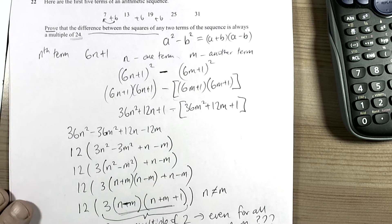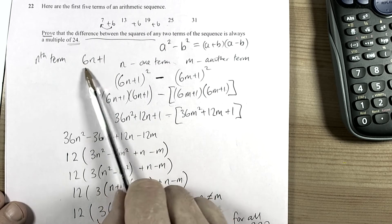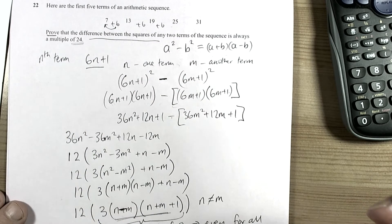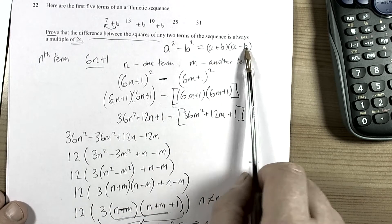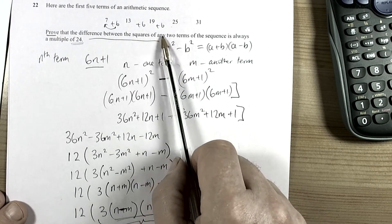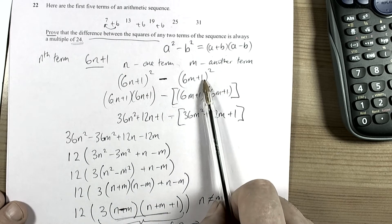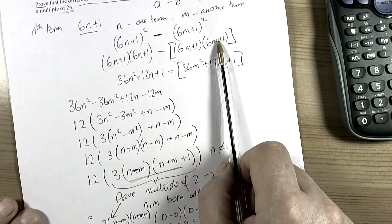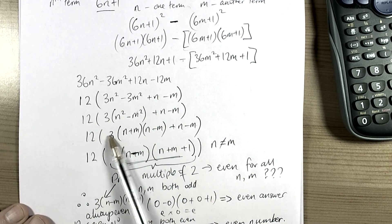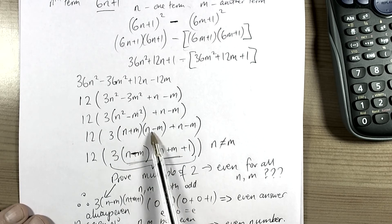This is quite a complex question, hence it's worth 6 marks. First, work out the linear rule for the sequence — 6n + 1 — which gets you one mark for method. We set up the difference of two squares factorisation, and used n and m to represent any two terms. We then expanded the brackets, looked for common factors, and saw that we had 12 times a series of brackets. At that stage we recognised the difference of two squares and rewrote accordingly.